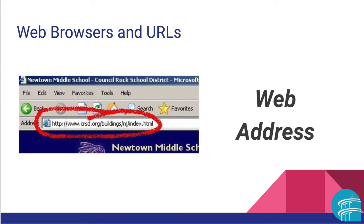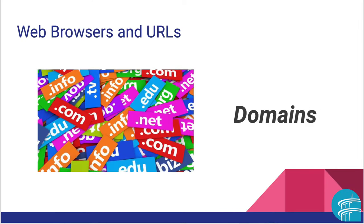A web address tells a computer the correct combination of letters, numbers, and or characters to reach a particular website from any computer in the world. It is also why it is called a URL, or a Uniform Resource Locator. A web address or URL contains no spaces and does not forgive spelling errors. The end of a URL or a web address provides information that may tell users something about the type of site it is.